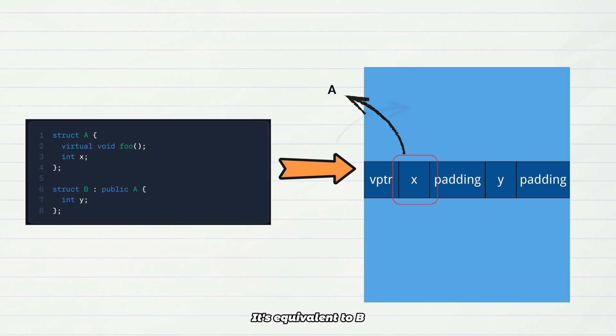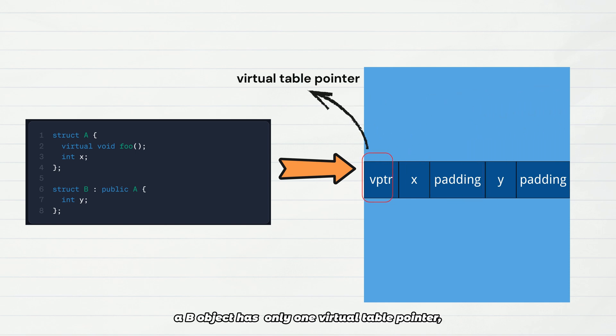It's equivalent to B appending its own members after the base class A. In single inheritance, a B object has only one virtual table pointer.